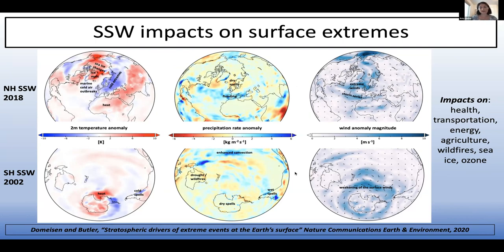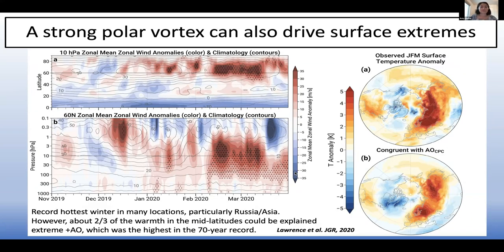Daniella Domeisen and I highlighted this in a recent Nature Communications paper on how the stratosphere drives extreme events at the earth's surface. When we hear about the polar vortex, we typically think cold snowy weather, but a sudden warming can lead to impacts in a variety of different ways — including heat over Africa and Asia, flooding events, storm series over the North Atlantic, and in the southern hemisphere, wet spells over South America, drought, and wildfires — with further impacts on health, transportation, energy, and agriculture.